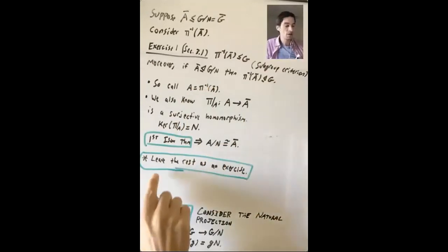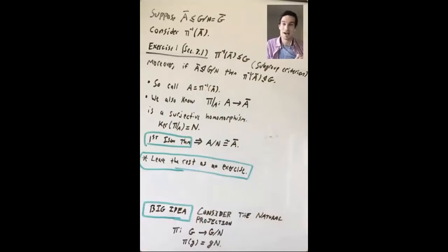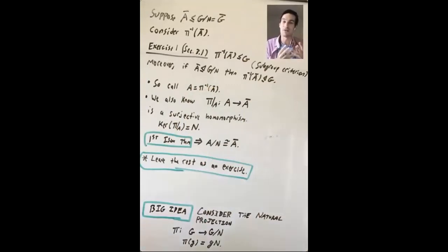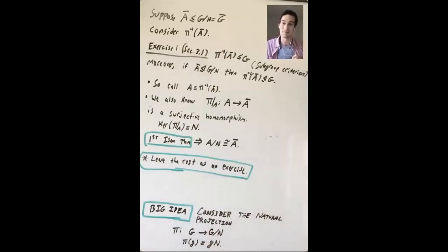I'll leave the rest of the details as an exercise, as done in Dummit and Foote. No individual piece is particularly difficult, and you now have all the tools to work out the full proof. I'll draw a picture to show why this is called the lattice isomorphism theorem.